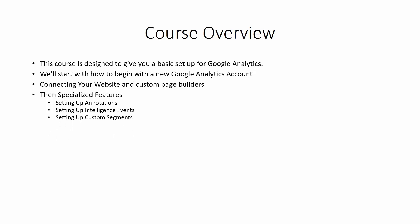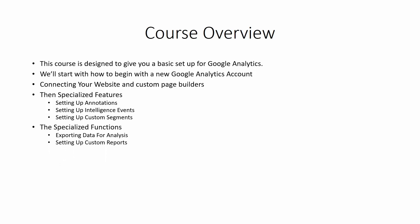We'll be setting up custom segments so that you can break down different views of your website activity. We'll then be looking at specialized functions of Google Analytics — talking about how you can export your data for further analysis as well as setting up custom reports. We'll also be talking about different integrations you can do with Google Analytics to extend the functionality, as well as different templates that have already been created that you can use so that you don't have to create them all yourself. And specialized actions such as real-time reporting, which allows you to see what's happening with your site at the moment.